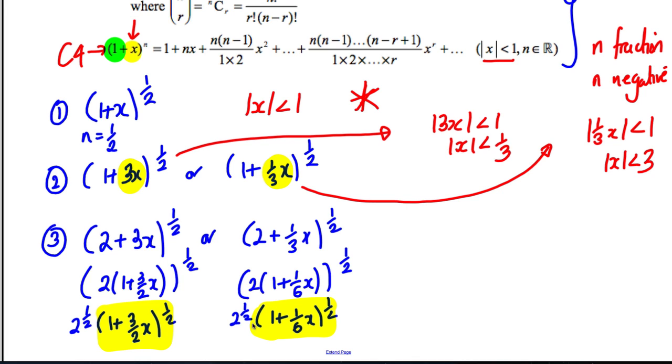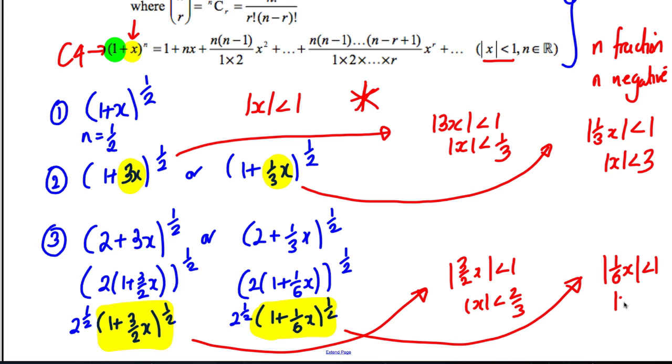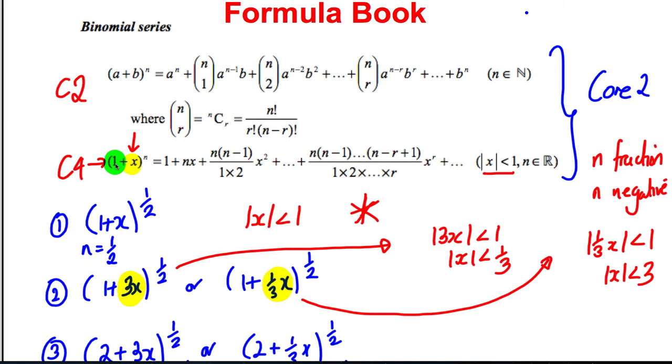In the two cases we've done here, |3X/2| < 1 so |X| < 2/3, and |X/6| < 1 so |X| < 6. It's very important you write those down. For these formulas to work, that number must be 1 and the modulus of whatever this expression is must be less than 1. That's the binomial theorem.